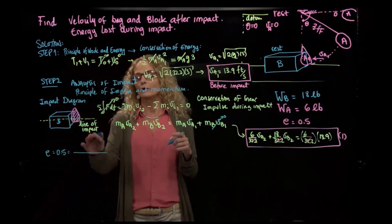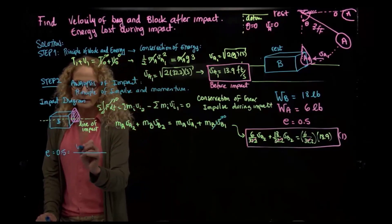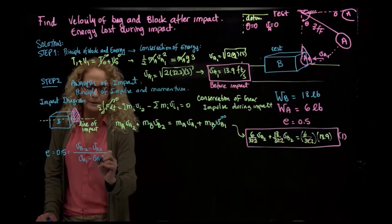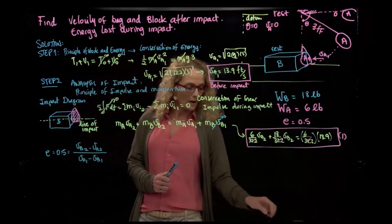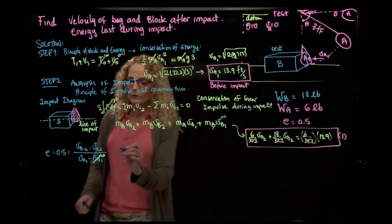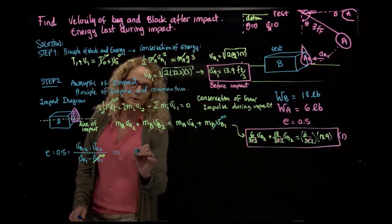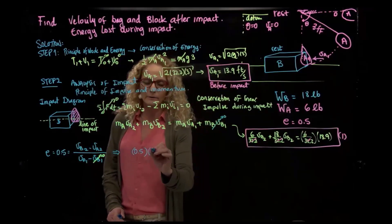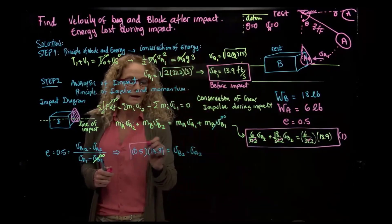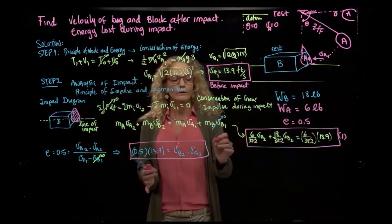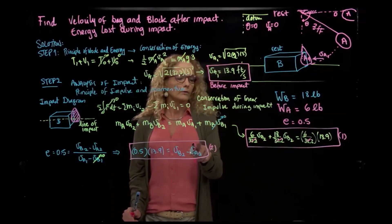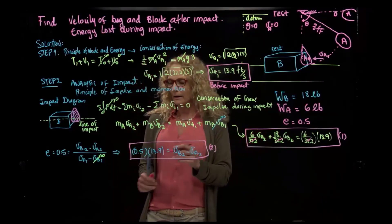The coefficient of restitution gives us: velocity of separation over velocity of approach, so V_B2 minus V_A2 equals e times (V_A1 minus V_B1). Since V_B1 equals zero, this becomes: 0.5 times V_A1 equals V_B2 minus V_A2. This is our second equation with the same two unknowns — velocity of B and velocity of A after impact. Solve for one variable and plug it into the first equation.